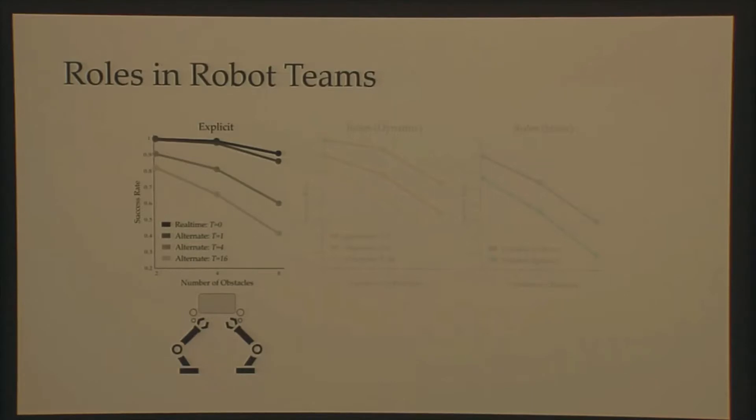We considered a spectrum of different types of communication. On the far left, you see an explicit communicating team, which is sending messages to one another saying, oh, this is where this goal is or, oh, this is where this other goal is. Now, at the other end of the spectrum are teams that have fixed roles. I'm either always a speaker or always a listener.